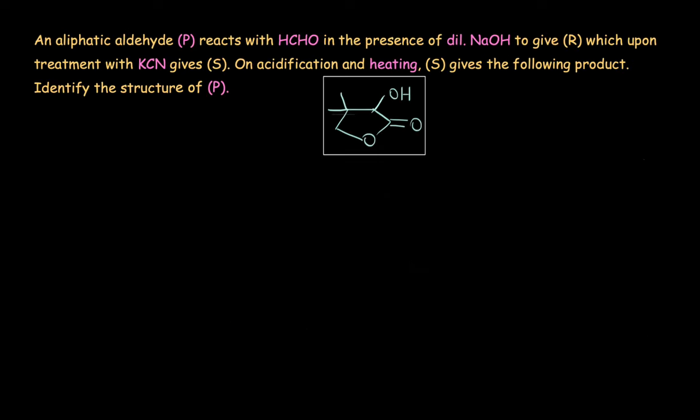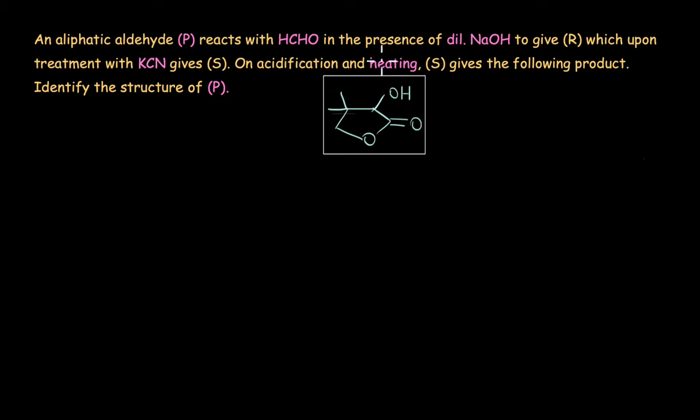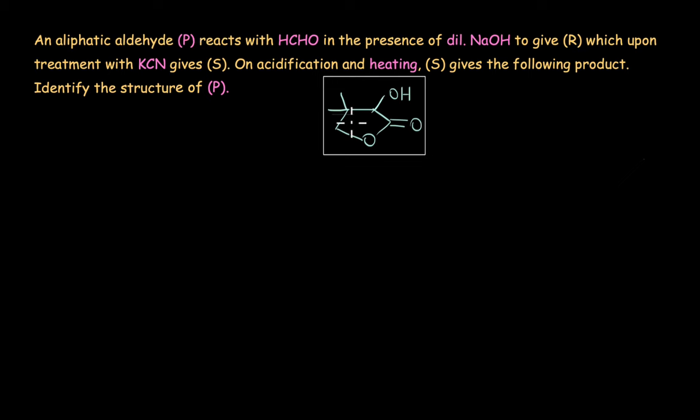Let's look at one more reaction. In this question it is given that an aliphatic aldehyde P reacts with formaldehyde in the presence of dilute NaOH to give R which upon treatment with KCN gives S. On acidification and heating S gives us the following product. And what do we need to do? We need to figure out the structure of the starting aliphatic aldehyde P. This is an example of a deconstruction problem where we need to figure out the starting reactants from a given product. So how do we go about this? Let's analyze the reactions that are taking place.